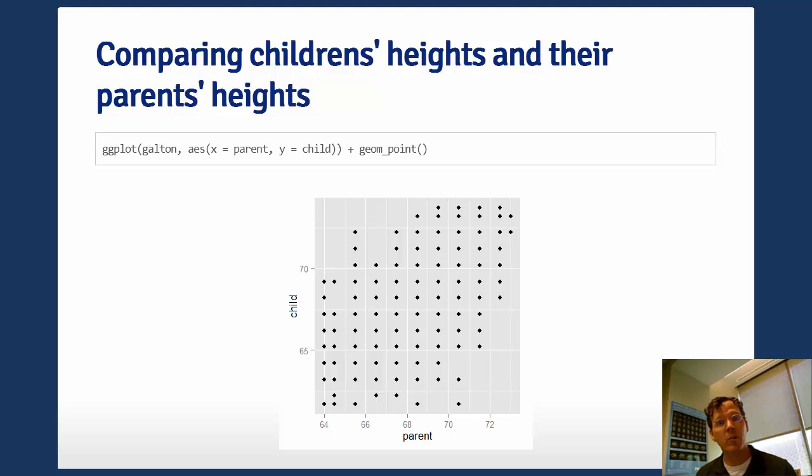Up to this point, we haven't used the parent's heights at all. The first thing in this kind of data we would want to do is create a scatter plot of the child's heights by the parent's height.